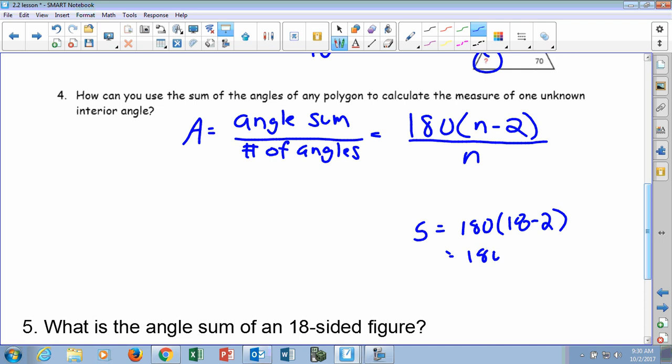16. Now, I know all you guys got calculators out there, so someone help me. What is 180 times 16? It's a big number. Yeah, that's a little tough to do in your head. Who's got a calculator? So, 2,880. Now, what did we just find there? That's the sum of all the angles, right?